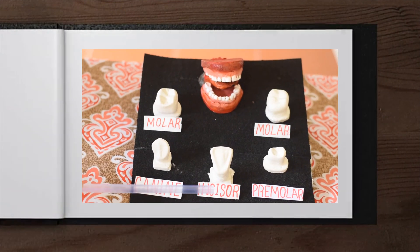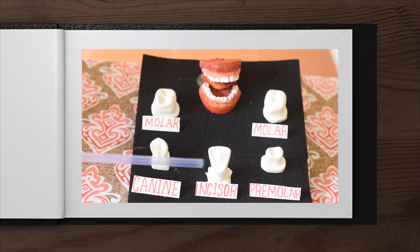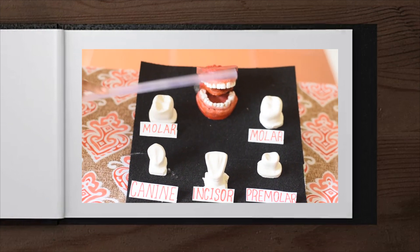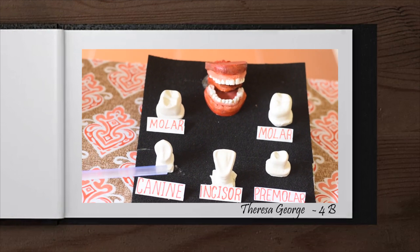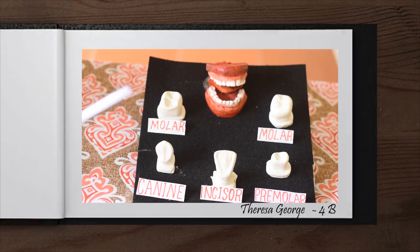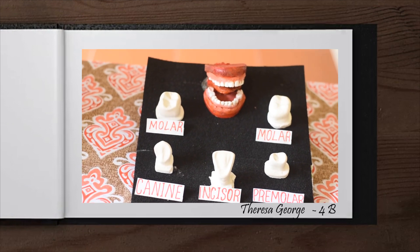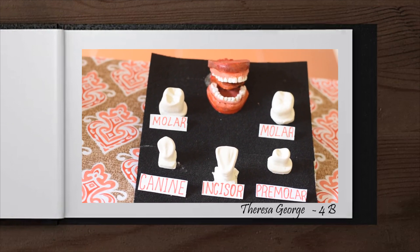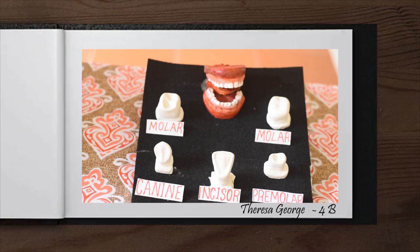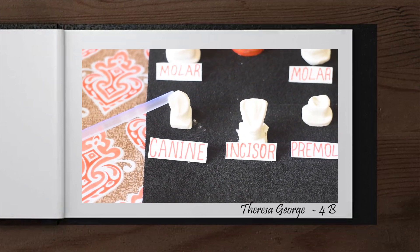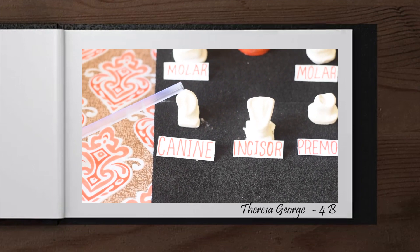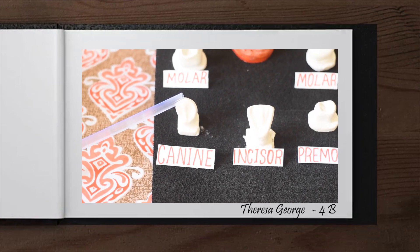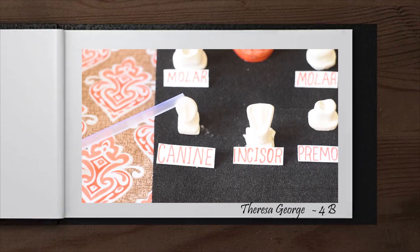Humans have four types of teeth in their mouth: incisors, canines, premolars, and molars. Incisors are located at the front of the mouth and have a flat and sharp edge. They are used for cutting and biting food like fruits and vegetables. Canines are located next to the incisors and have a sharp pointed edge. They are used to grip and tear food like meat.